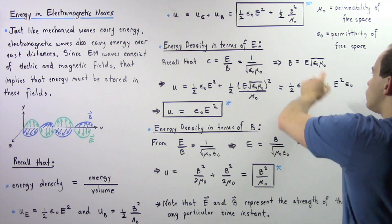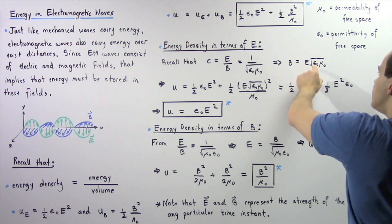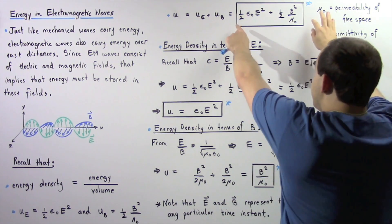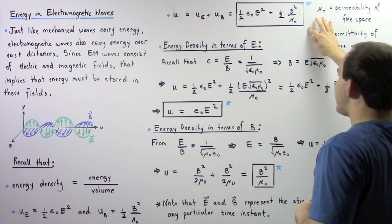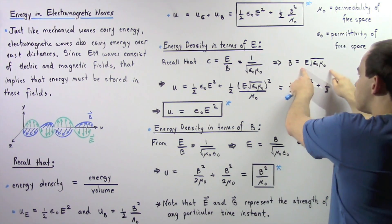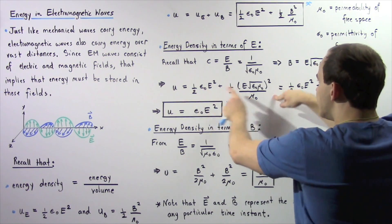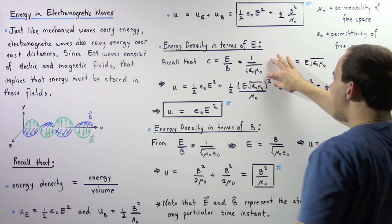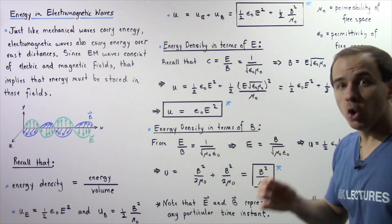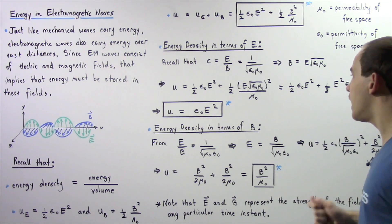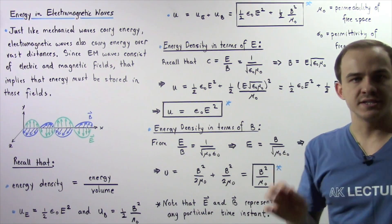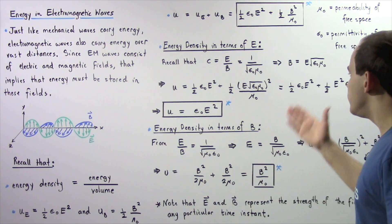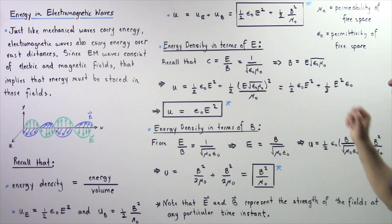The magnetic field B is equal to the product of the electric field E and the square root of epsilon naught times mu naught. Substituting this expression for B into our total energy density equation and squaring, we get E squared multiplied by epsilon naught multiplied by mu naught. Since mu naught appears in both the numerator and denominator, we can cancel it out.